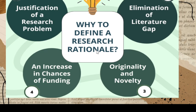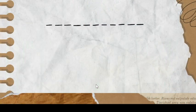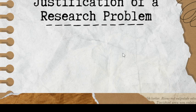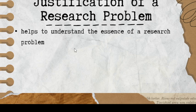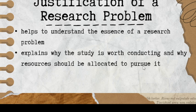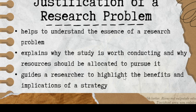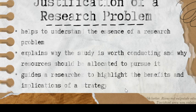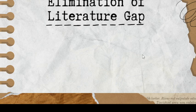The rationale serves as the justification for the research and how it contributes to the field. These are some of the reasons why we define a research rationale: justification of a research problem, elimination of literature gap, originality and novelty, and an increase in chances of funding. When we say justification of a research problem, it helps to understand the essence of a research problem. It explains why the study is worth conducting and why resources should be allocated to pursue it. It guides a researcher to highlight the benefits and implications, and reminds us that the rationale is the foundation of your study.